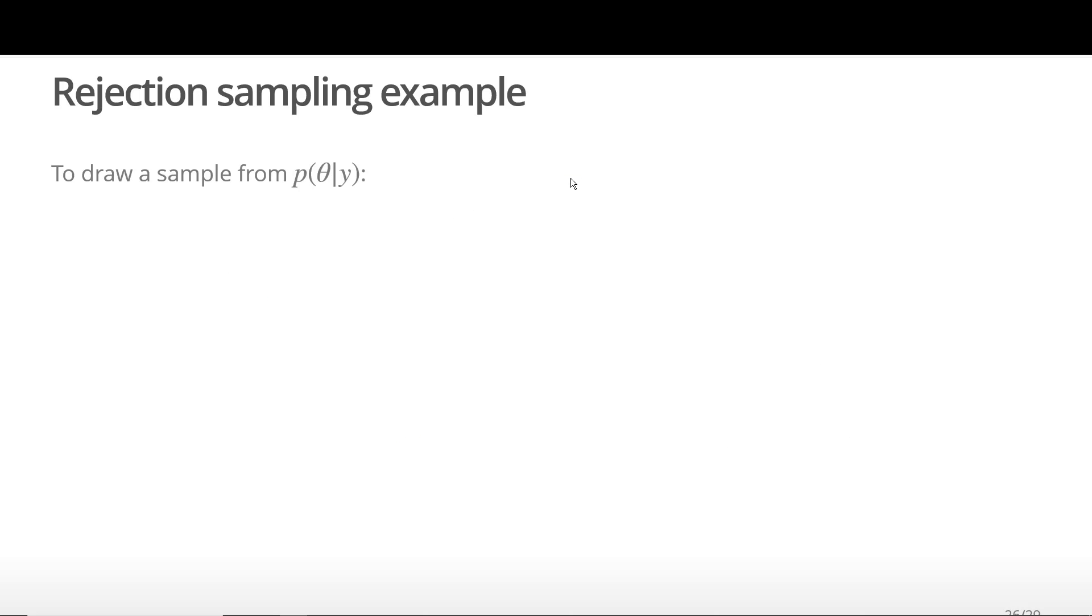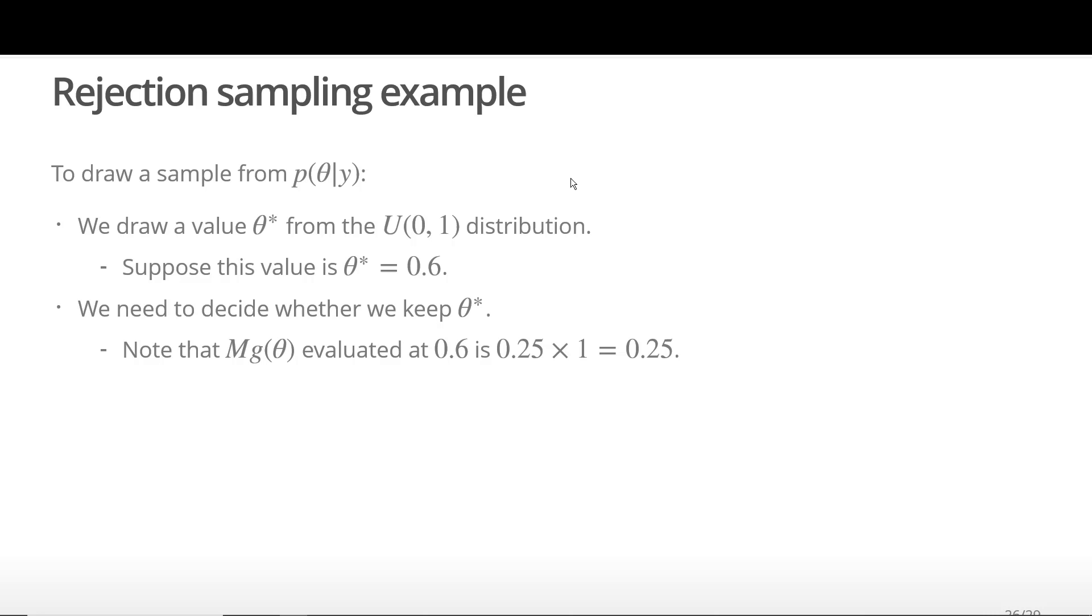Let's do an example. To draw a sample from our target density, we first draw a value theta star from our proposal distribution, which in this case is a uniform(0,1). Suppose the sampled value is theta star equal to 0.6. We need to decide whether we should keep the proposed value. If we evaluate the bounding function M times G at 0.6, we get 0.25. If we evaluate the unnormalized target density at 0.6, we get 0.6 times 0.4 equal to 0.24.